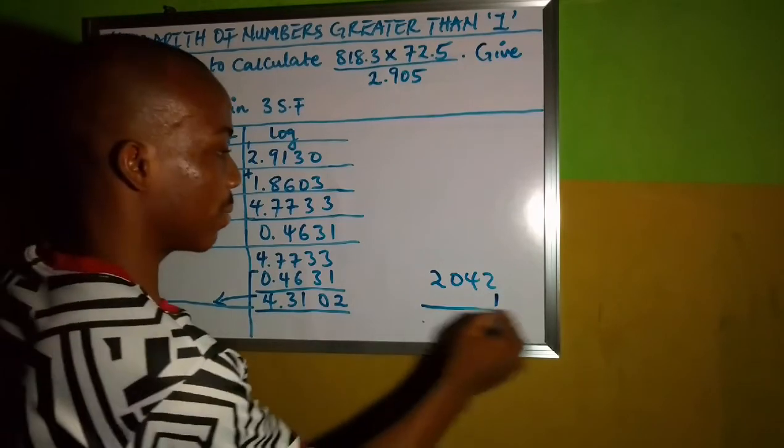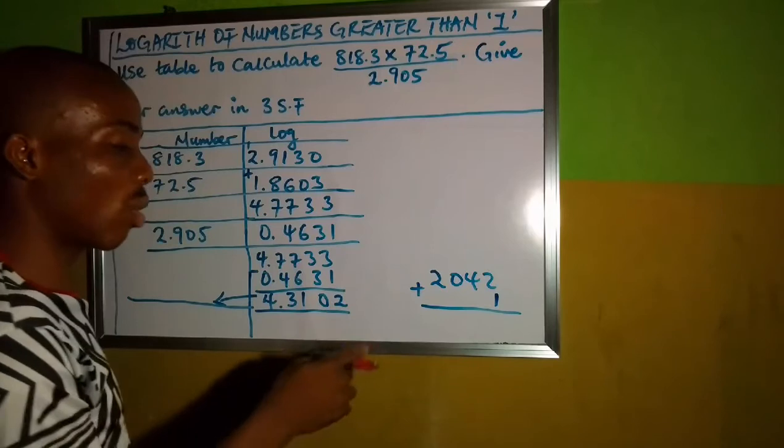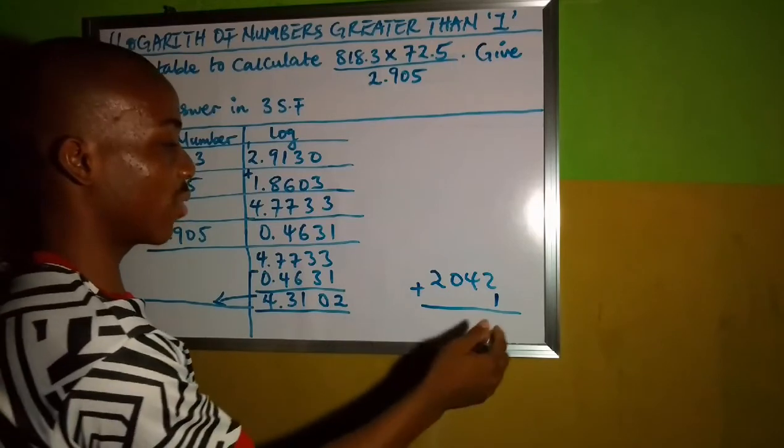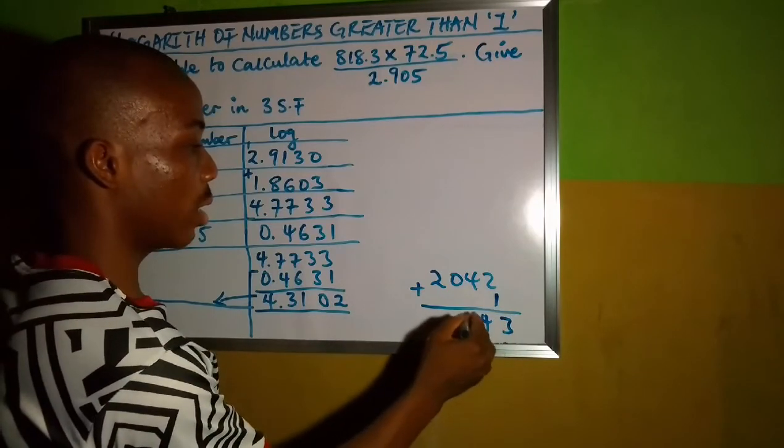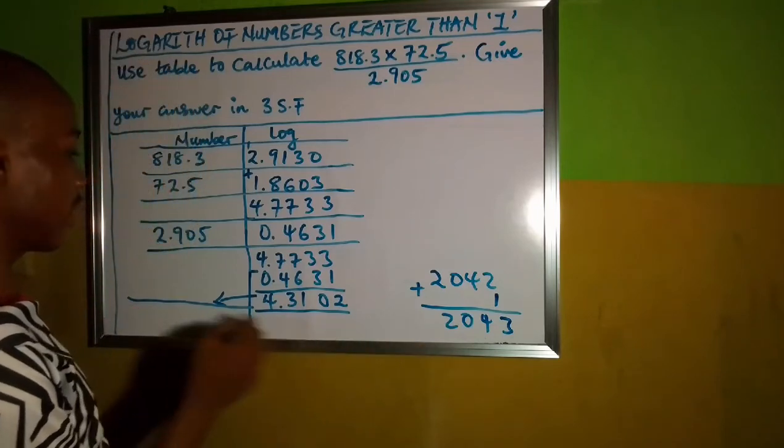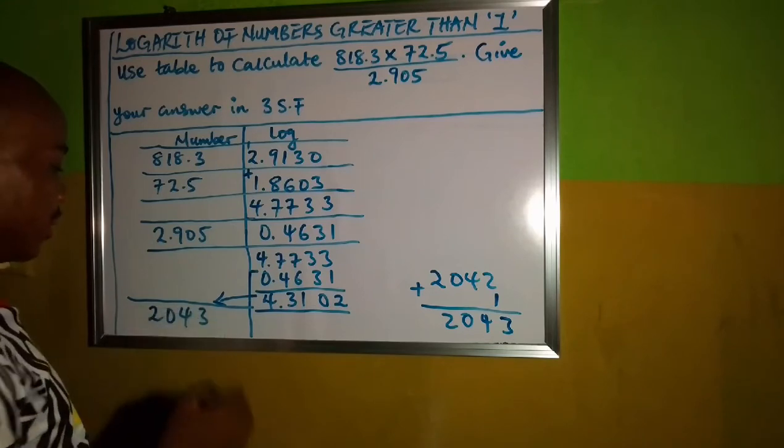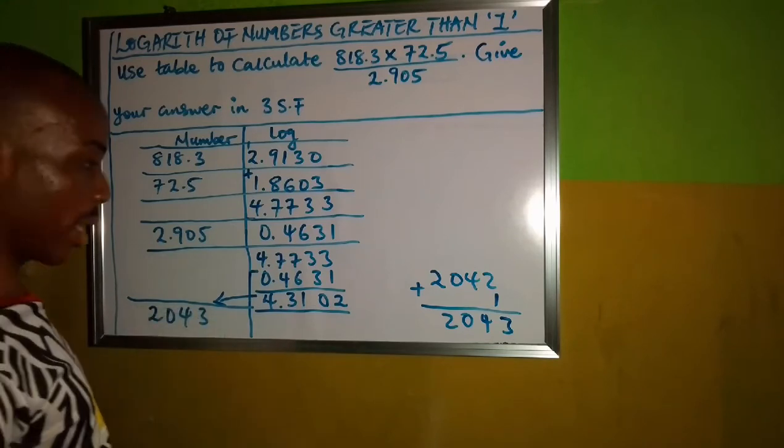And difference of 2 gives us 1. So we are going to add the difference. Whether you are doing log or antilogarithm, add the difference. This is 3, 4, 0 and 2. This is giving us 2,043.